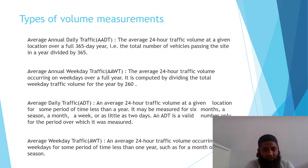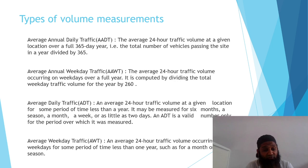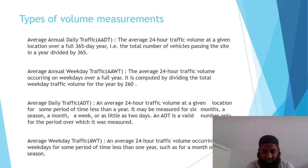Types of volume measurements: Average Annual Daily Traffic (AADT) is the average 24-hour traffic volume at a given location over a full 365-day year. It is the total number of vehicles passing the site in a year divided by 365. Once we get the total count divided by 365, we get the average number of vehicles passing that specific area within a day. Average Annual Weekday Traffic (AAWT) is the average 24-hour traffic volume occurring on weekdays over a full year. This count is done only on weekdays for the whole year.